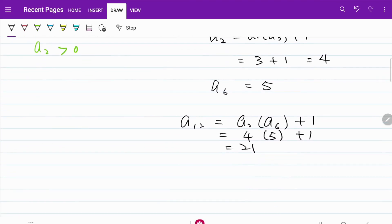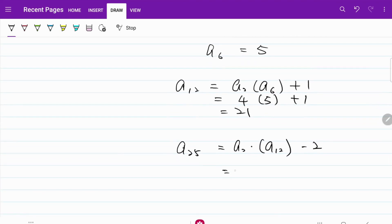And we get to our final destination, which is A25, which is equivalent to A2 multiplied by A12 - 2. And that's equal to 4 times 21 - 2, which is equal to 82. That's the final answer for today's question.